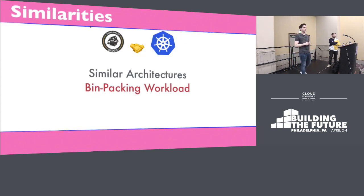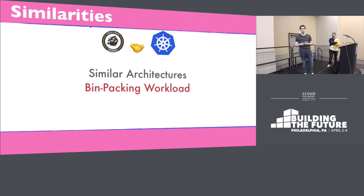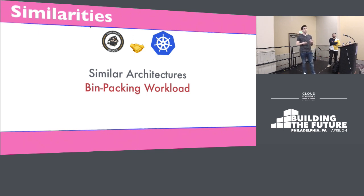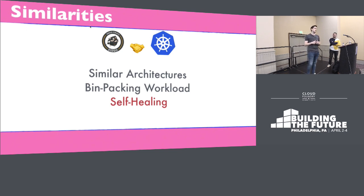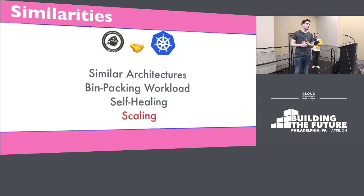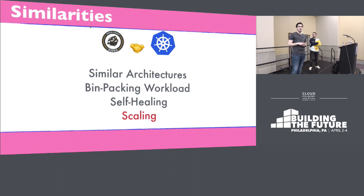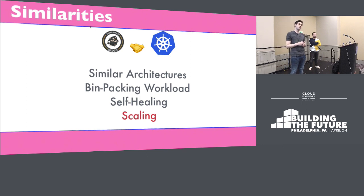The second big similarity is that they both try to solve the bin packing problem, meaning both Diego and Kubernetes are smart enough to know where to place your container in order to utilize system resources as best as possible without sacrificing availability. The third similarity is that they have self-healing capabilities — if your app crashes, it will get automatically restarted. And they can both scale your app up or down to balance incoming load or suit demand. They share core functionalities you'd expect from a container scheduler.